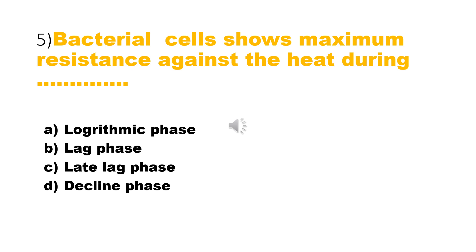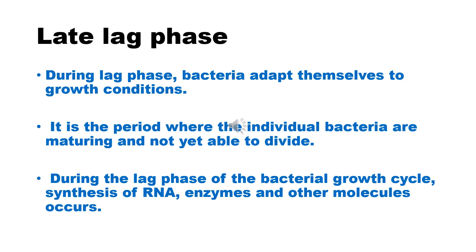Question number 5: Bacterial cells show maximum resistance against heat during — Options: A. Logarithmic phase, B. Lag phase, C. Late lag phase, D. Decline phase. The answer is late lag phase. During the lag phase, bacteria adapt themselves to growth conditions. It is the period where individual bacteria are maturing and not yet able to divide. During the late lag phase of the bacterial growth cycle, synthesis of ribonucleic acid, enzymes, and other molecules occurs.